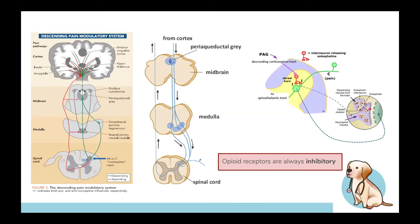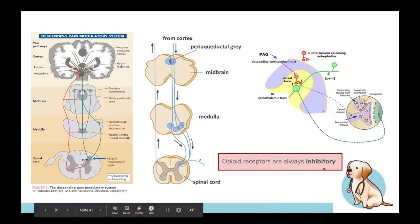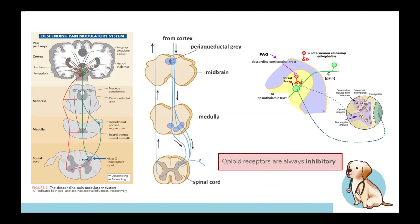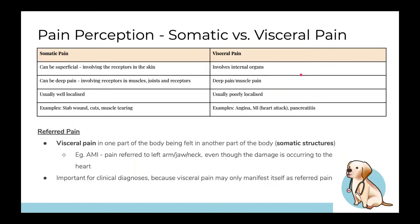The interneuron releases enkephalins, which bind to opiate receptors on the ascending axon. These opiate receptors are inhibitory — binding inhibits vesicle release, preventing the pain signal from reaching the brain. Think of opiate receptors as side-door receptors on the axon. Opioid receptors are always inhibitory; when the interneuron releases enkephalins onto opiate receptors, it stops the ascending pain pathway.